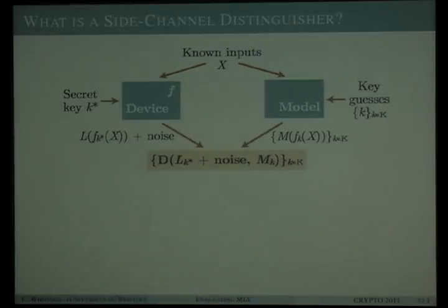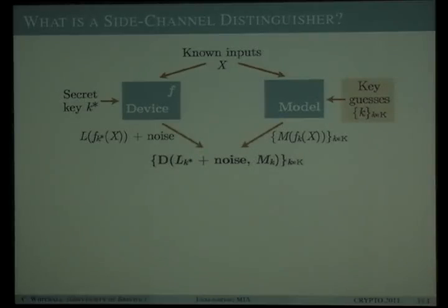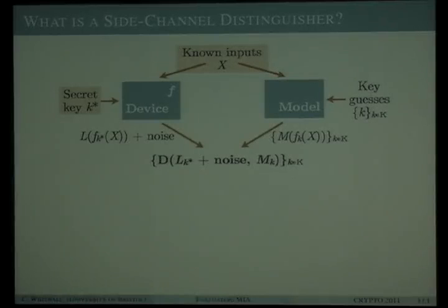These two distinguishers are mutual information analysis and its predecessor, correlation DPA. In the context of differential side channel analysis, a distinguisher is any statistic which is used to compare side channel measurements with hypothesis-dependent predictions in order to uncover the correct hypothesis in a key recovery attack, usually in relation to an exhaustively searchable set of sub-keys. For example, the power consumption of a device as it performs a computation is partly dependent on the known inputs and the secret key.